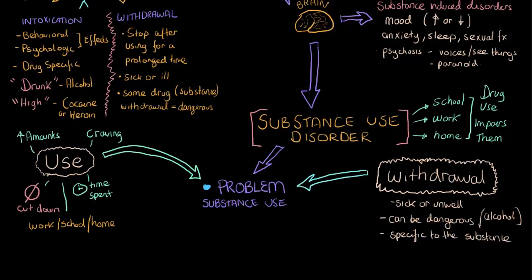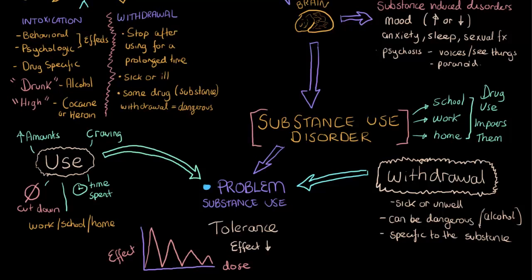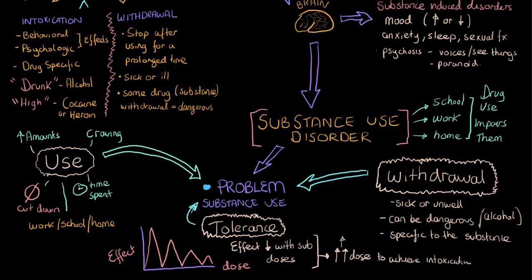The last thing I want to mention is the presence of something called tolerance. If we graph effect against dose, the effect of the drug decreases with subsequent doses — your body adapts to, or builds a tolerance to, the substance. So what people do to overcome this tolerance is they tend to keep increasing the dose or amount of the substance they use in order to achieve the same level of intoxication. The way people are using, the problems they encounter with the substance, the development of withdrawal symptoms, and the development of tolerance all suggest that we have a problem.